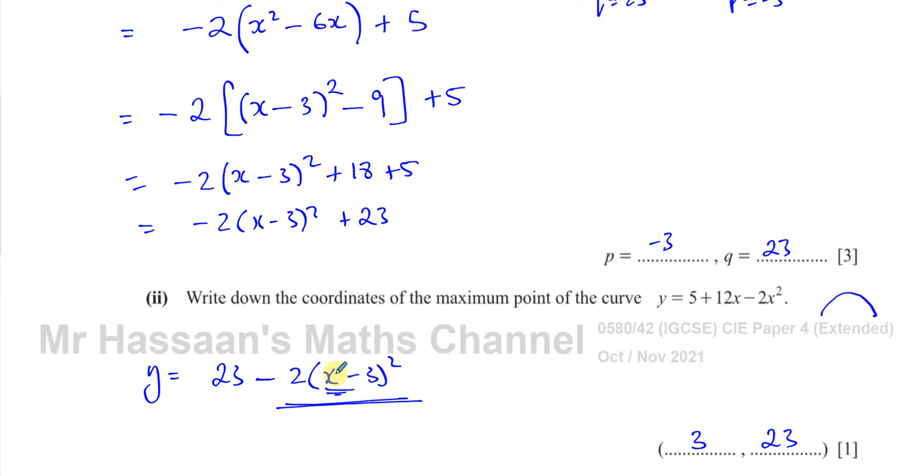Okay, when x is 3, this bracket becomes 0. And you've got 2 times 0, which is 0. 23 - 0 is 23.